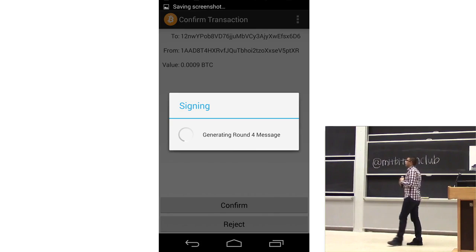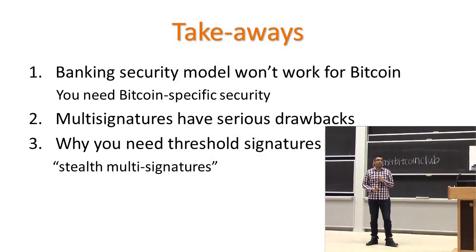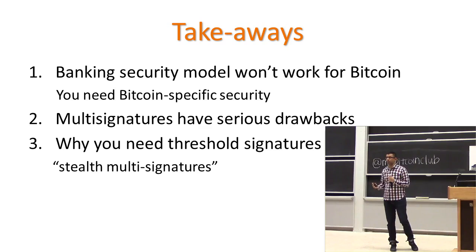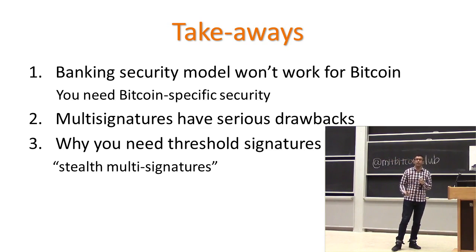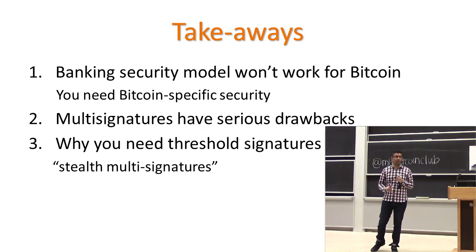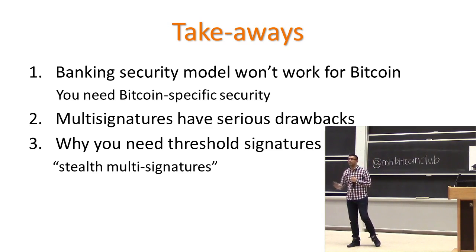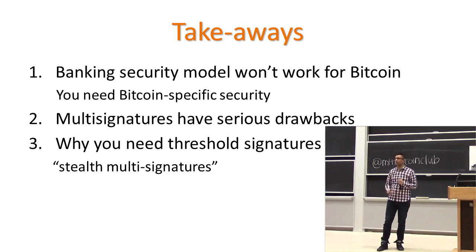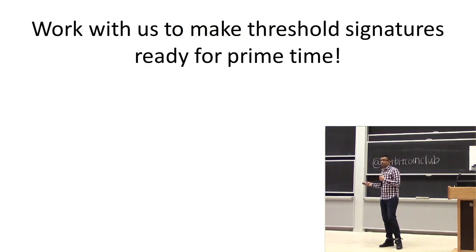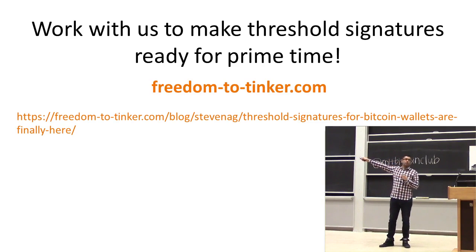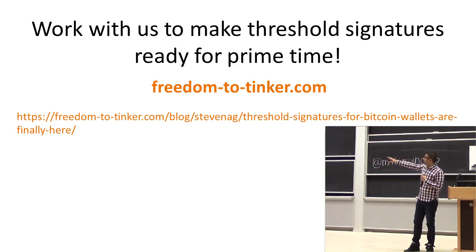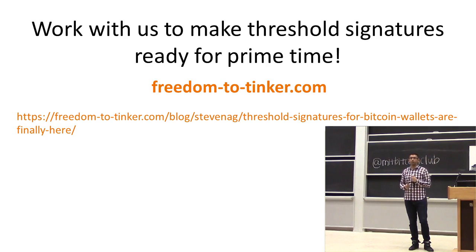To summarize: banking has very sophisticated security procedures, but those are mostly able to come into play because transactions are reversible and there are strong forms of know-your-customer. For Bitcoin, we need to do things differently. Multi-sig is one good way, but has serious drawbacks — it destroys anonymity and forces you to put your entire security internals onto the blockchain. Instead, threshold signatures are a form of stealth multi-signatures, allowing you to take control of your security. We have prototype code at freedomtotinker.com. It's not quite ready for prime time yet, but with your help, we can make this happen.